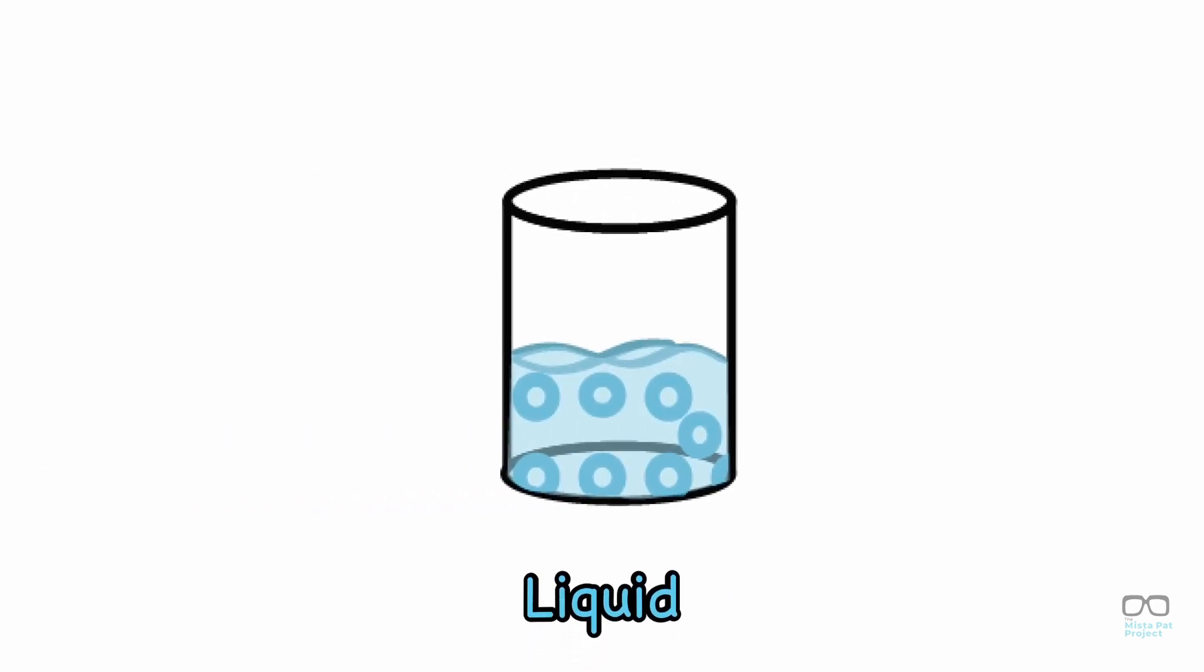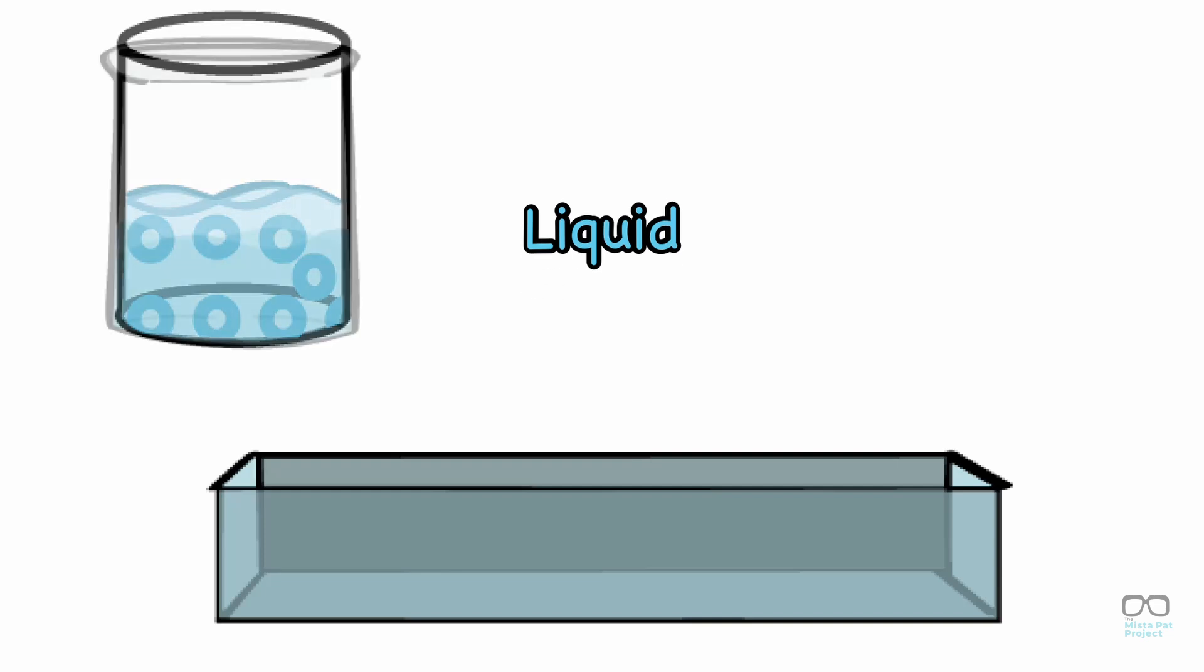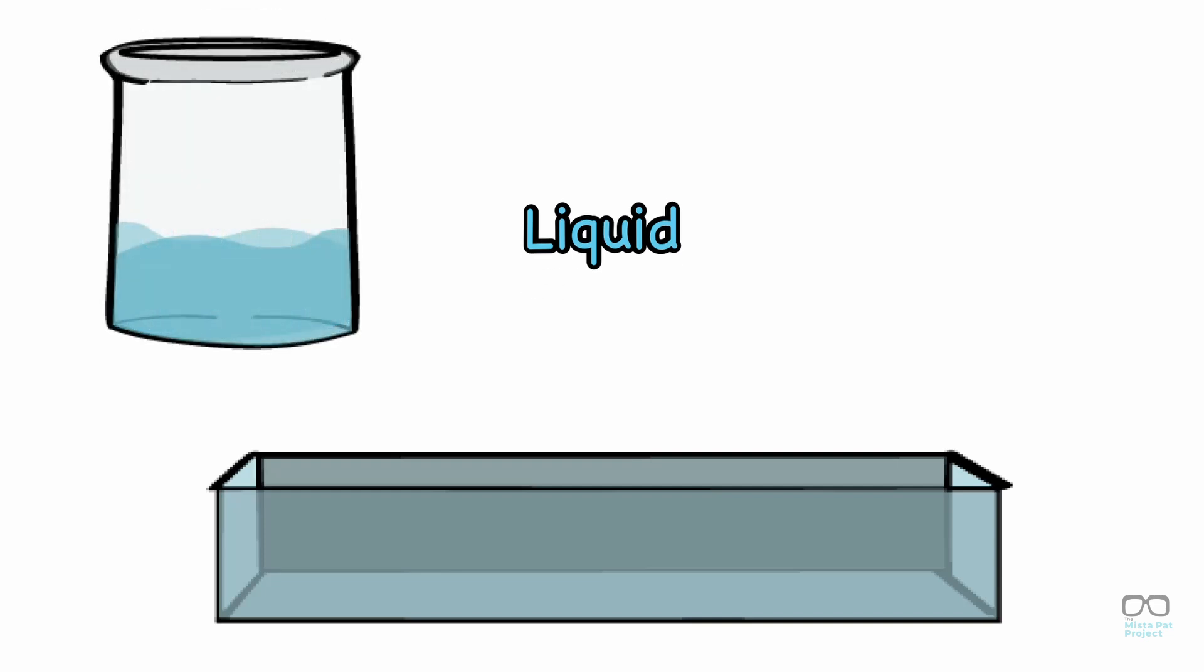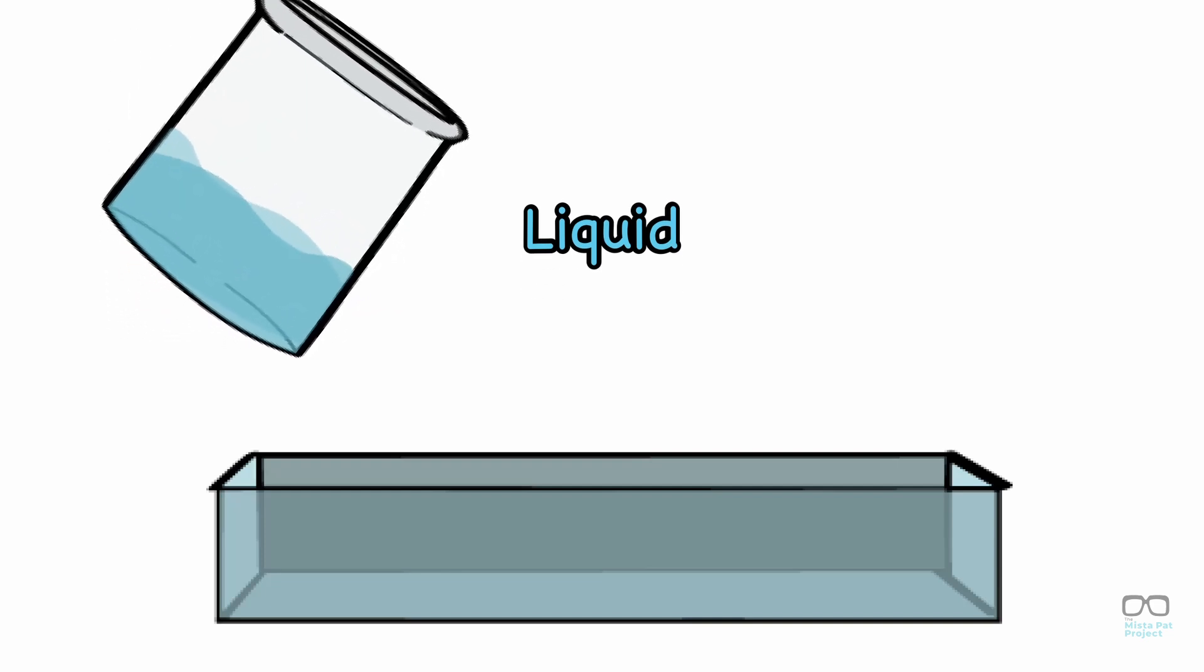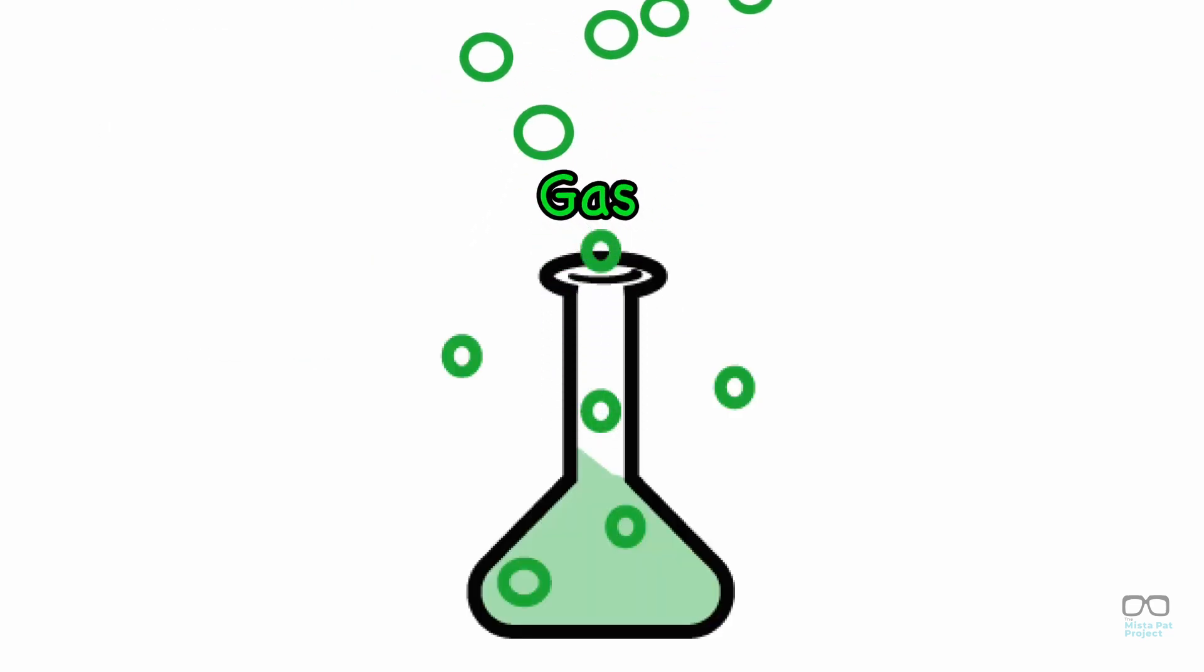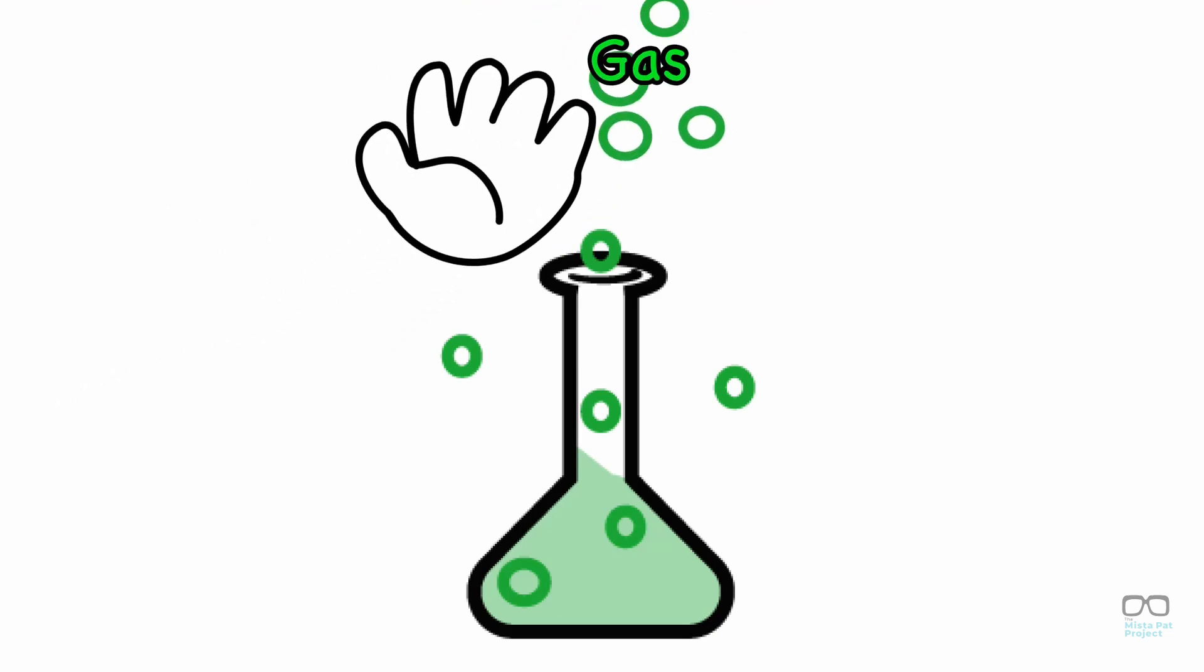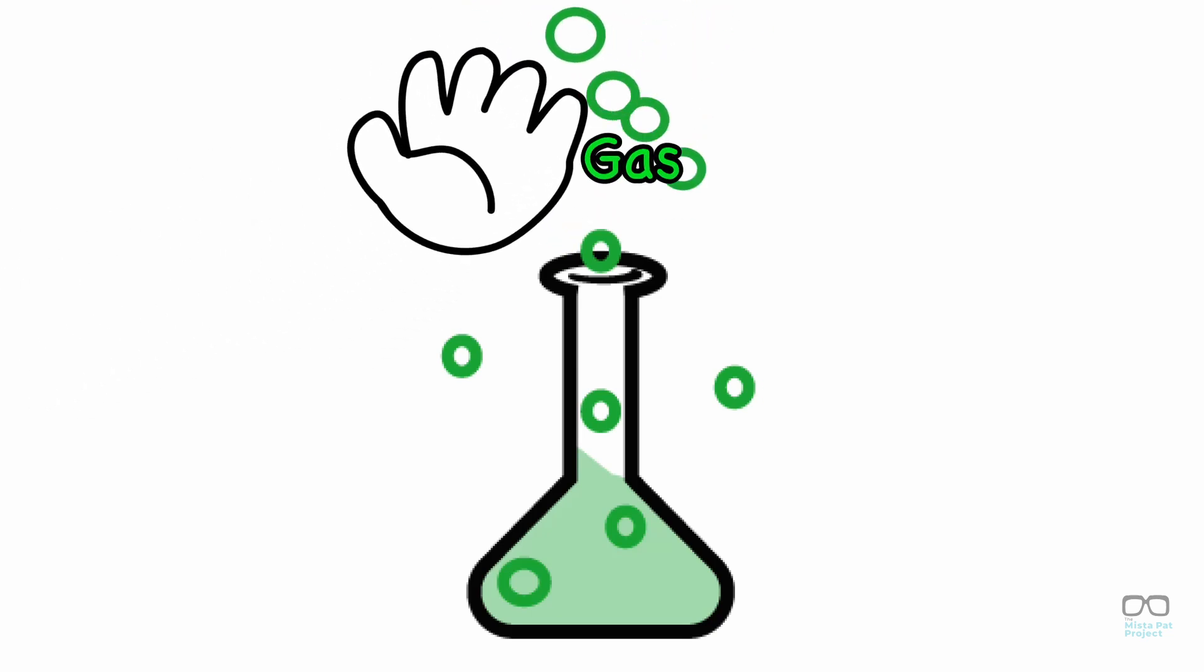Atoms in liquid are packed together as well but are able to move around each other which allows them to take shape of whatever we put them in. Like when we pour the liquid from this cup into this tank. Atoms in gas are not bunched together and move fast. Because of this it's easy to move things like our hand through the air. These atoms just like to get out the way.